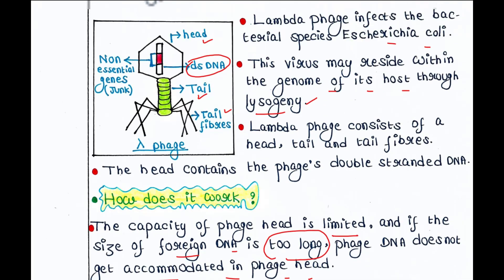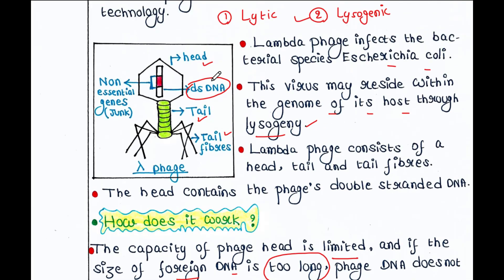The double-stranded DNA of the phage has some non-essential parts — essentially junk DNA. We can cut that junk part and insert our gene of interest in its place, so that the double-stranded DNA size is maintained and can then be packaged into the phage head.